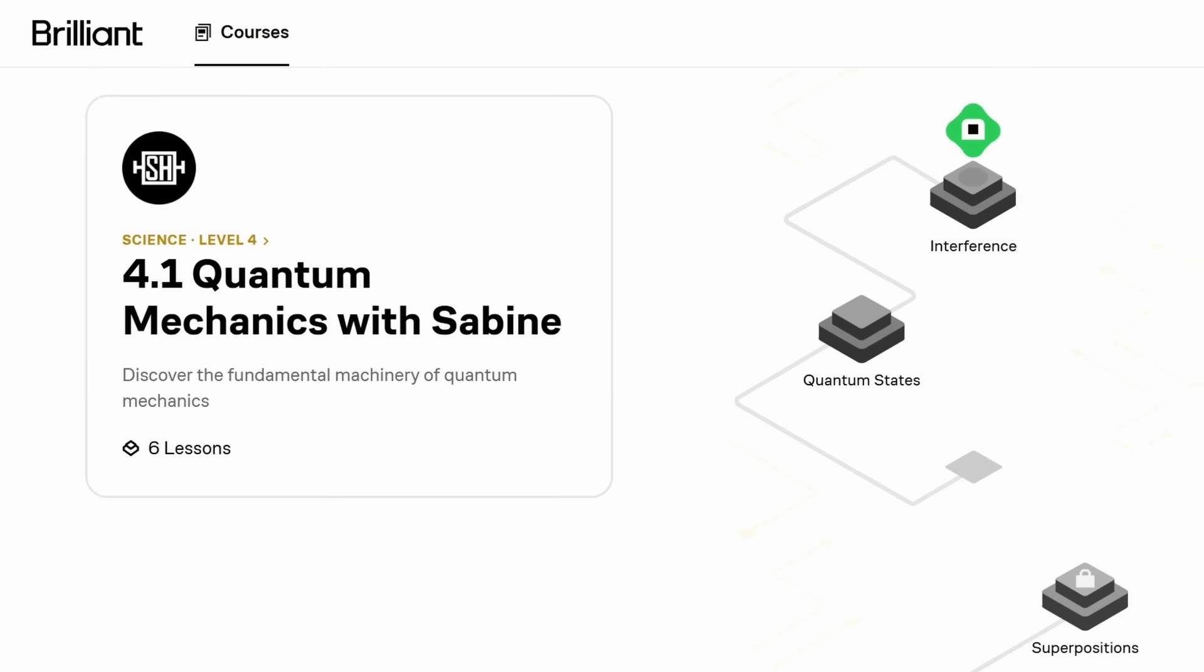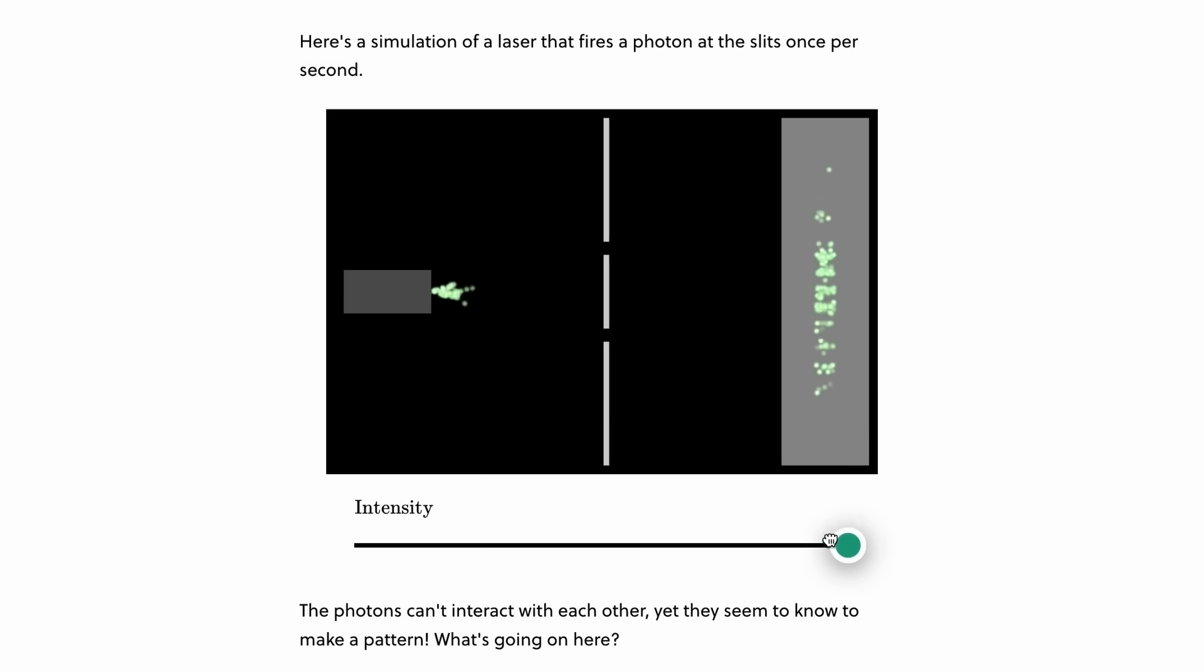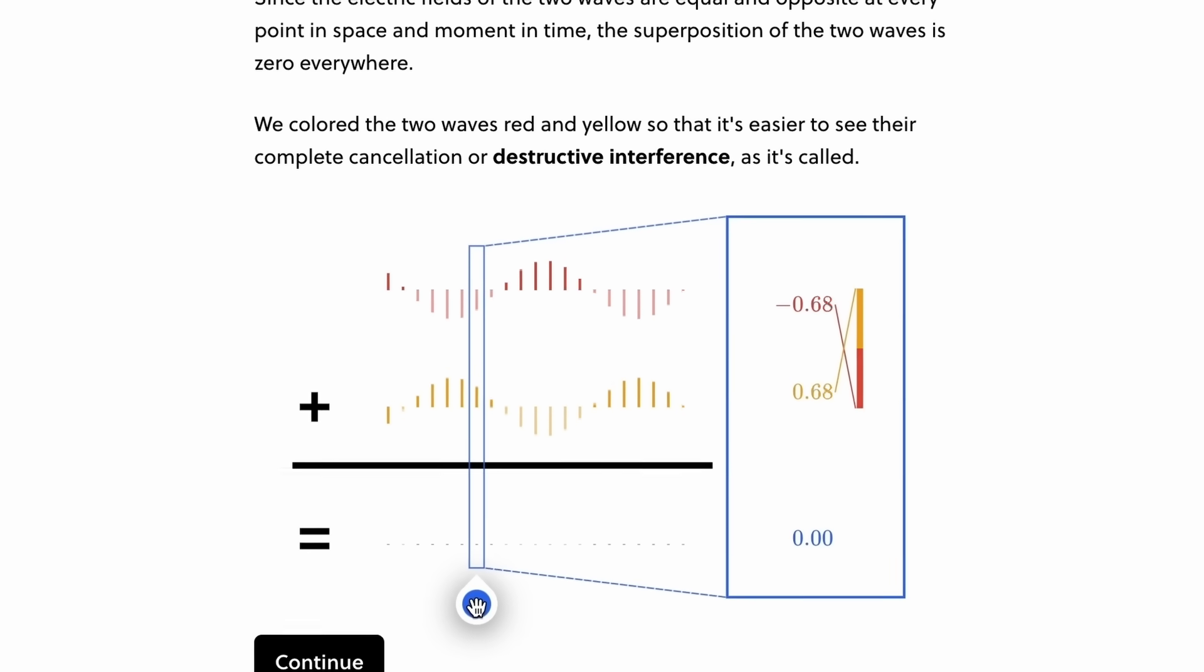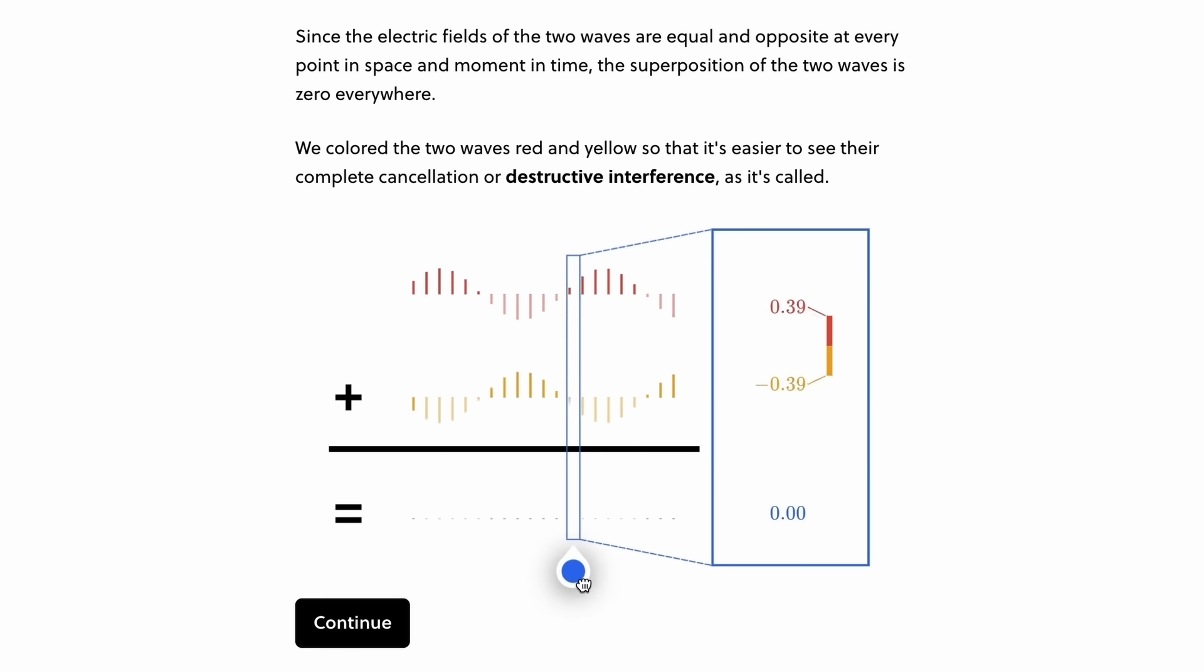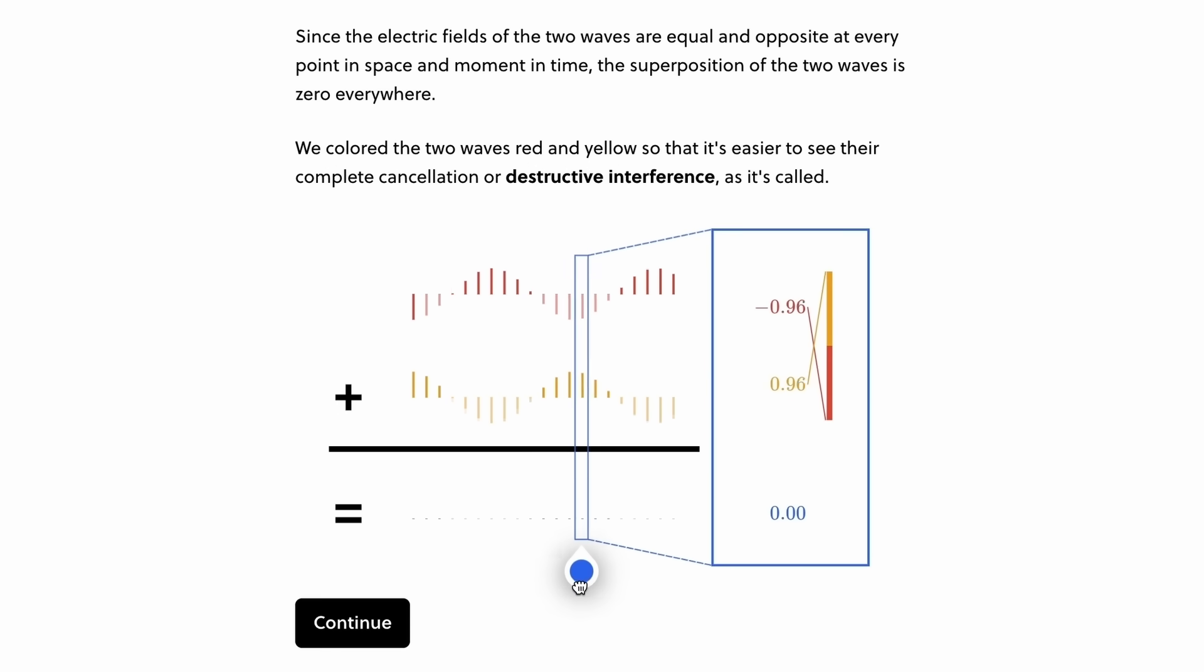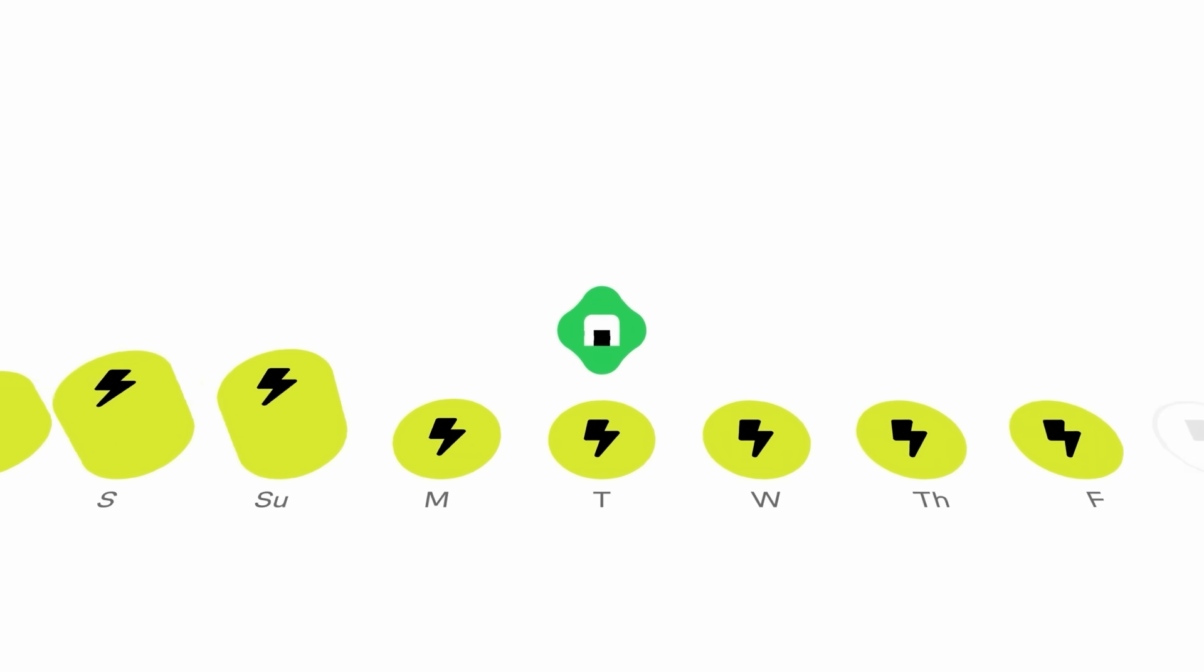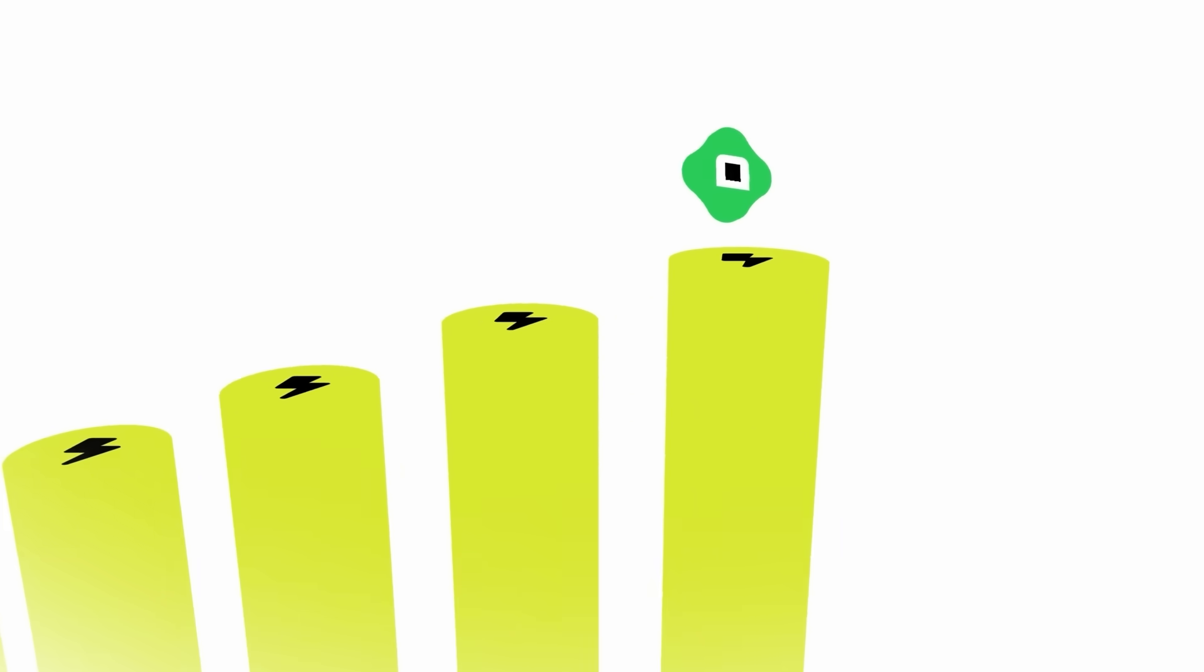I even have my own course on Brilliant. That's an introduction to quantum mechanics. It'll help you understand what a wave function is and what the difference is between superpositions and entanglement. It also covers interference, the uncertainty principle and Bell's theorem. And after that, you can continue maybe with their course on quantum computing or differential equations.